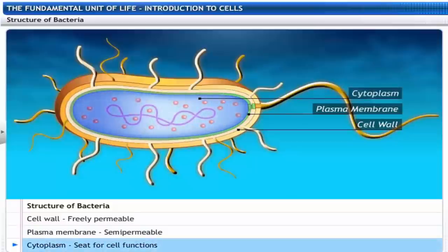The cytoplasm is a clear, thick, jelly-like material that forms the seat for all the cell functions.